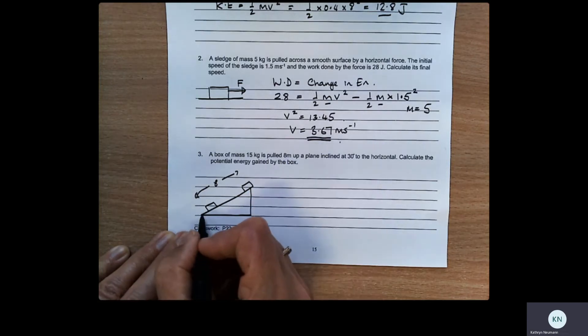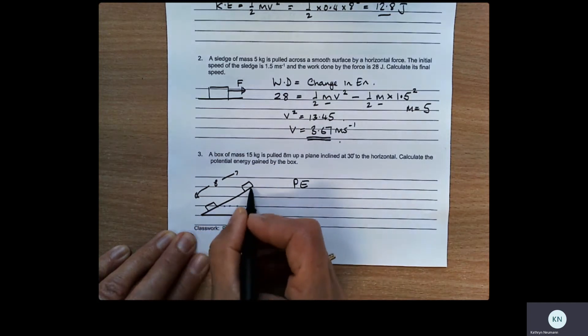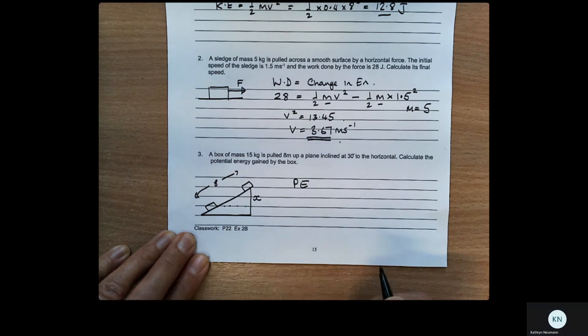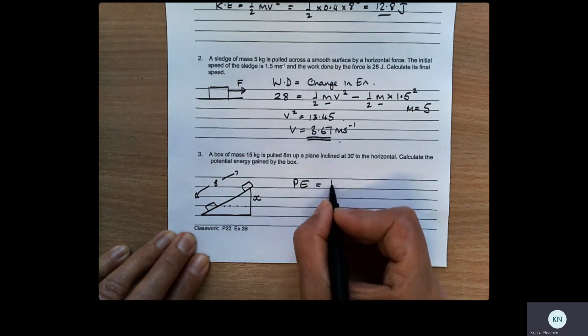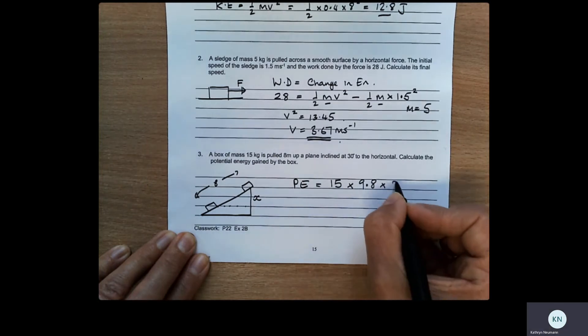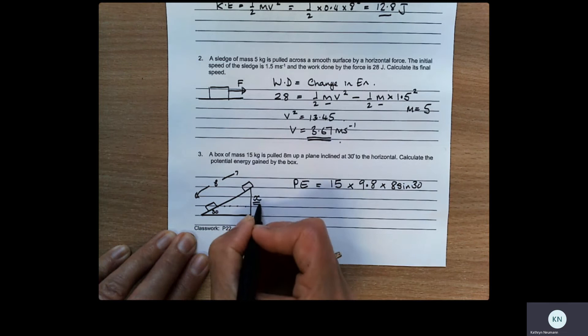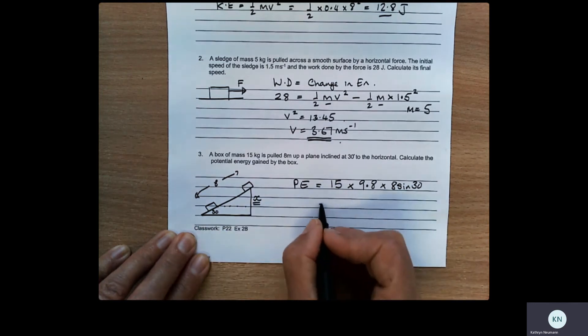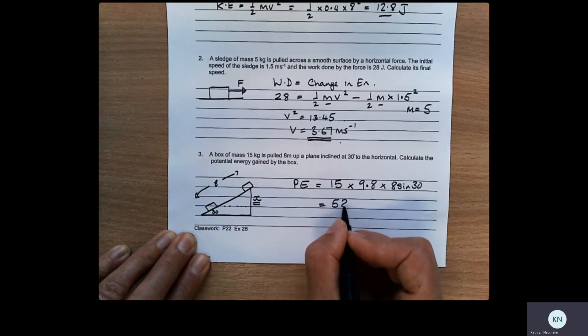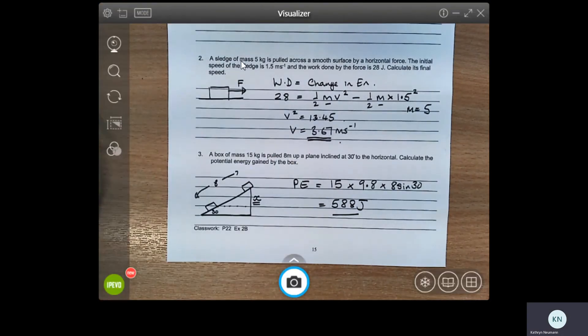We know that the mass of the box is 15 kilograms. So in order to work out its potential energy gained, well, that's going to be, we need to know this height here, which is x. So we're going to say that that is equal to the potential energy is the mass, times gravity, multiplied by 8 sine 30. So this angle here was 30. So we need to work out the vertical distance raised. And when you work that out, you get 588 joules. So that's how you work out some fairly straightforward examples of energy.